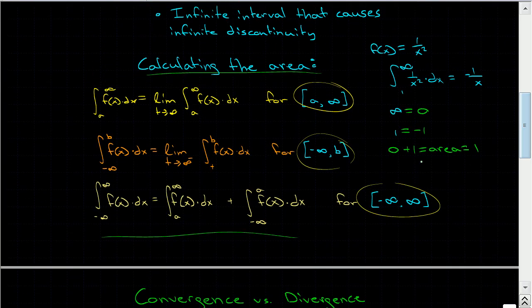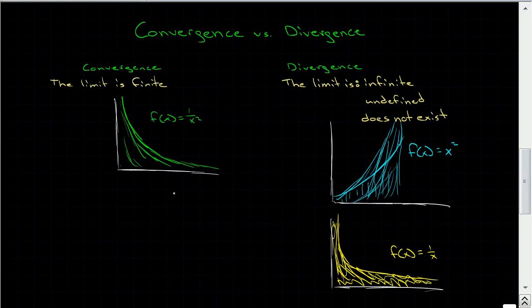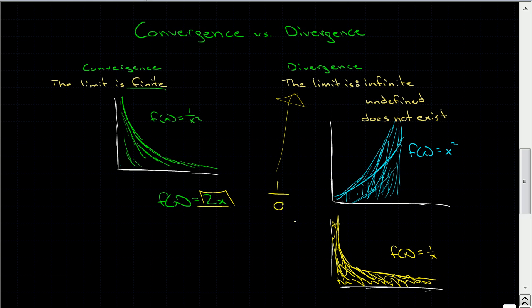For instance, we calculated the previous example and found that the area was 1 — that's convergent. But if we had f of x equals 2x, then the area is infinite, so it's not convergent. Convergent means the limit is finite and we can calculate it. Divergent means the limit is infinite, or it's undefined — like 1 divided by 0. Functions like x squared, 2x, or 1 over x would be divergent. Convergent means it comes down to a calculable point; divergent means we can't evaluate it.